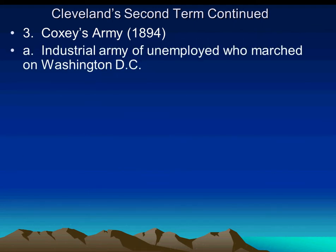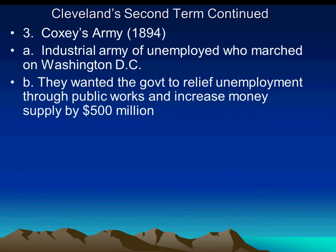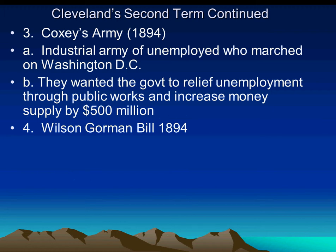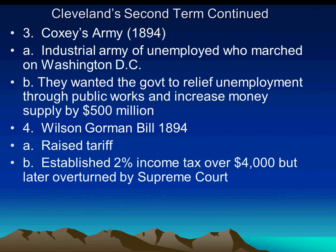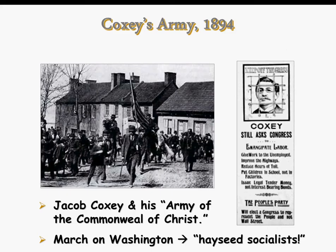Coxey's Army, 1894: these are industrial workers who march on Congress for relief. They want Congress to spend more money on public works so that it will put some people to work. The Wilson-Gorman Bill is passed in 1894, again raising tariffs, which makes it more expensive to buy things overseas. And then they retaliate and raise tariffs so it's harder to sell American goods overseas.